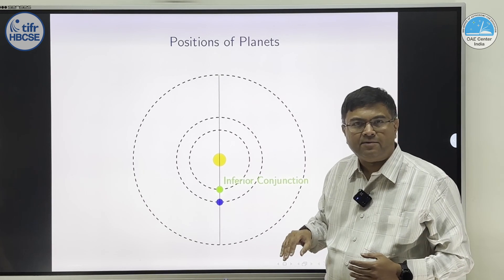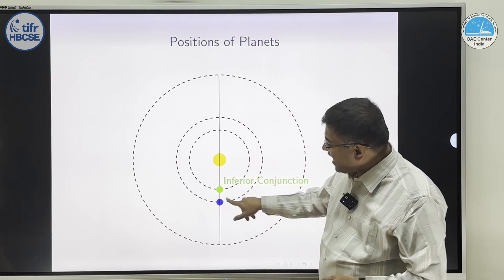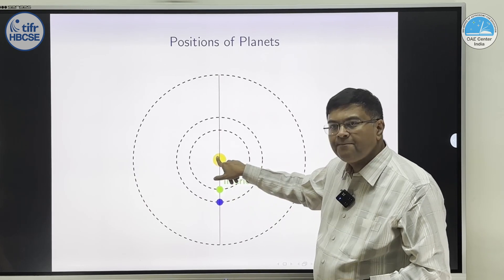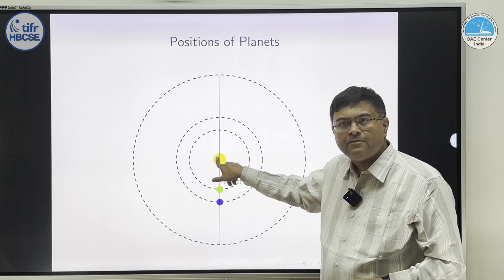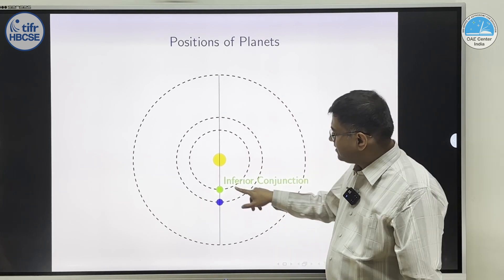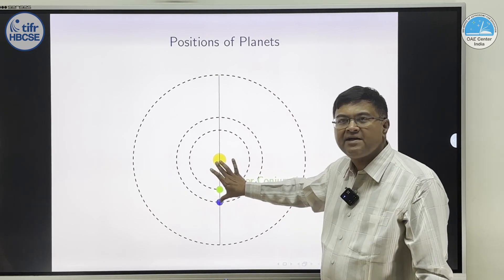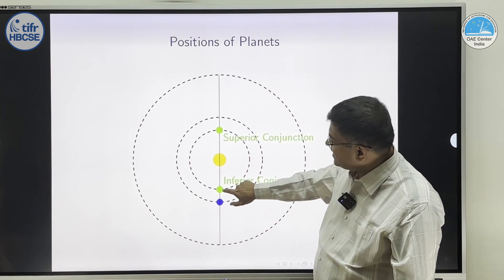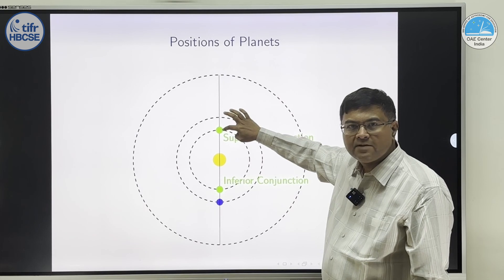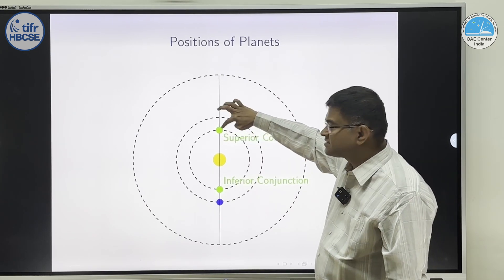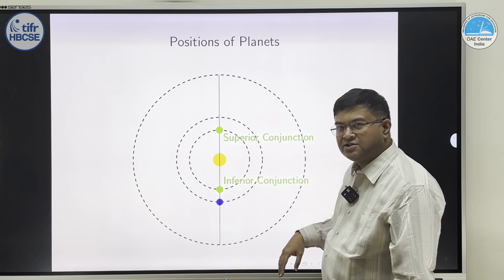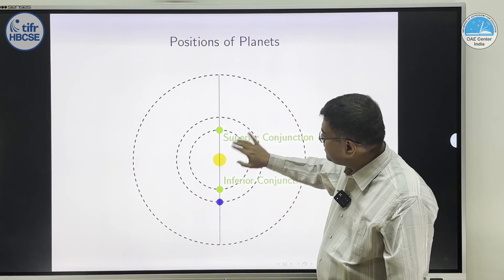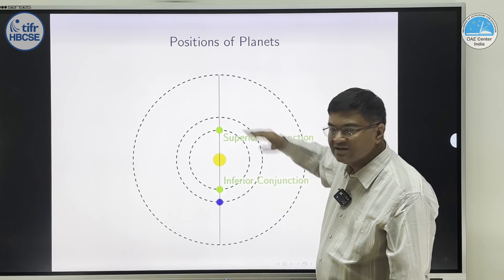Conjunction is coming together. Why coming together? As seen from Earth, we will see the planet and the Sun in the same direction. So they are seeing as they have come together. Inferior because the planet is inner. Next, we can have this same inner planet on the other side. Same vertical plane on the other side. We call that superior conjunction. Here, in conjunction, they are seeing together but superior because it is the inner planet on the other side.